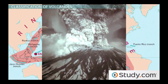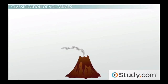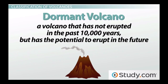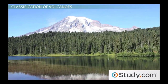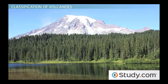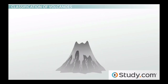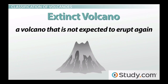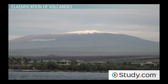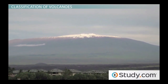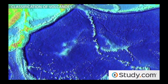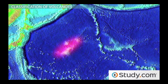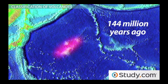A dormant volcano has not erupted in the past 10,000 years but has the potential to erupt in the future. Mount Rainier in Washington state is an example of a dormant volcano — at over 14,000 feet, it is a sleeping giant that keeps volcanologists on their toes. An extinct volcano is one not expected to erupt again, as it no longer has a lava supply. In 2013, researchers discovered the world's largest volcano lying at the bottom of the Pacific Ocean — a 400-mile-wide volcano that last erupted about 144 million years ago and has been extinct ever since.